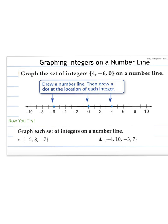Here we are graphing integers on a number line. So we're going to graph this set of integers: 4, negative 6, and 0 on a number line. We draw a number line. This one ranges from negative 10 to positive 10. We look for these numbers on the number line. I see 4 is here, so that's why we have our dot. Negative 6, we're below 0. And then 0 is at the 0 spot.